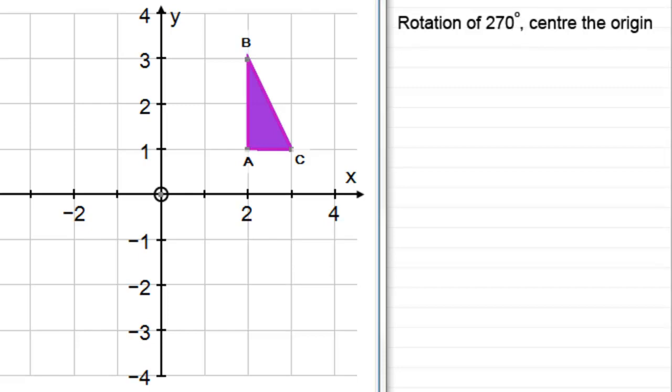So in other words, if we were to rotate this triangle ABC here, 270 degrees about the origin, that's 90 degrees, that's 180 degrees, 270 degrees will take us into this position here.